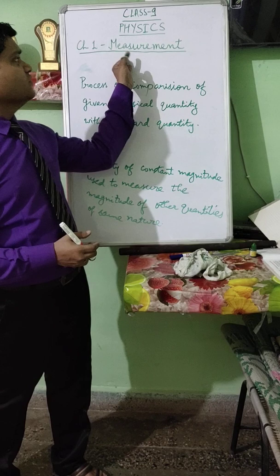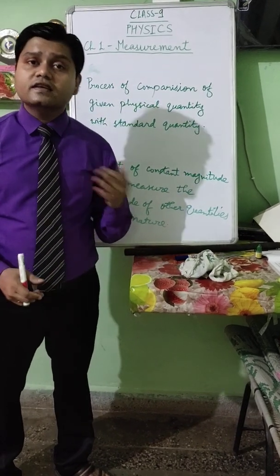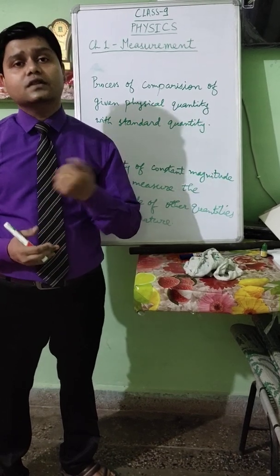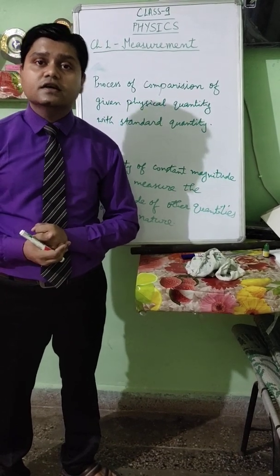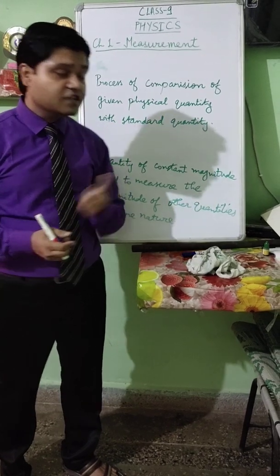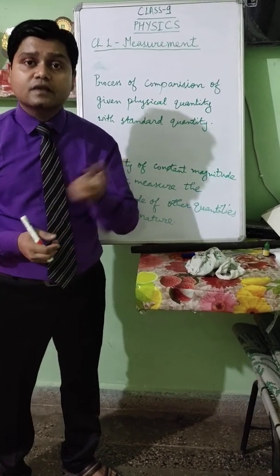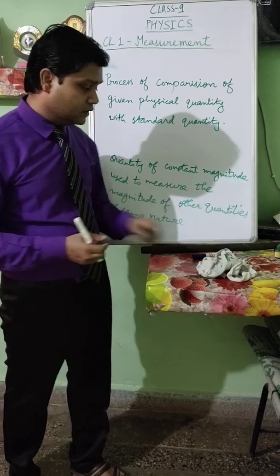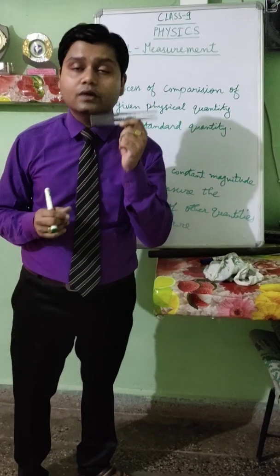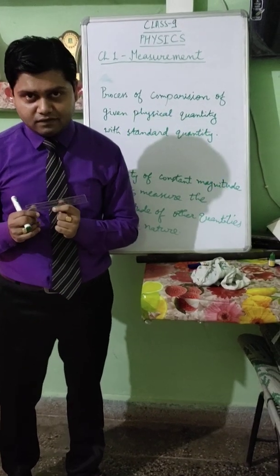Chapter 1 is Measurement and Experimentation. Since childhood, we are measuring small things in one way or the other which are present around us. If someone tells you to measure something — a line or something, as you might have done in maths — then you are using a device named a Ruler or Scale for measuring the length.